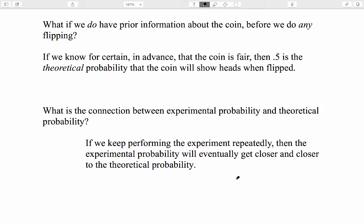But what if we do have prior information about the coin before we do any flipping? For example, what if we know for certain, in advance, that the coin has been designed to be perfectly fair? Then .5 is the theoretical probability that the coin will show heads when flipped. But it could also be that the coin has been deliberately designed to be weighted to one side, so that heads will have a 60% probability on each flip. Someone could design a coin that way, and they could sell it on the internet as a specialty coin, a trick coin, advertised to have a 60% probability of heads on each flip. If so, then 60% is the theoretical probability. Theoretical, because it's information that we have prior to doing any actual flipping.